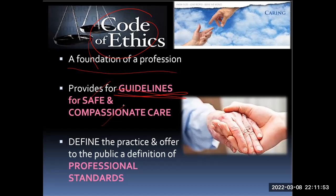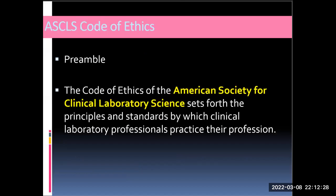The purpose of a code of ethics is to inform those acting on behalf of the organization how they should conduct themselves. A code of ethics reiterates the organization's values and morals so that employees and third parties understand the standards they are accountable to uphold. It defines the practice of others, the public, and is a definition of professional standards.